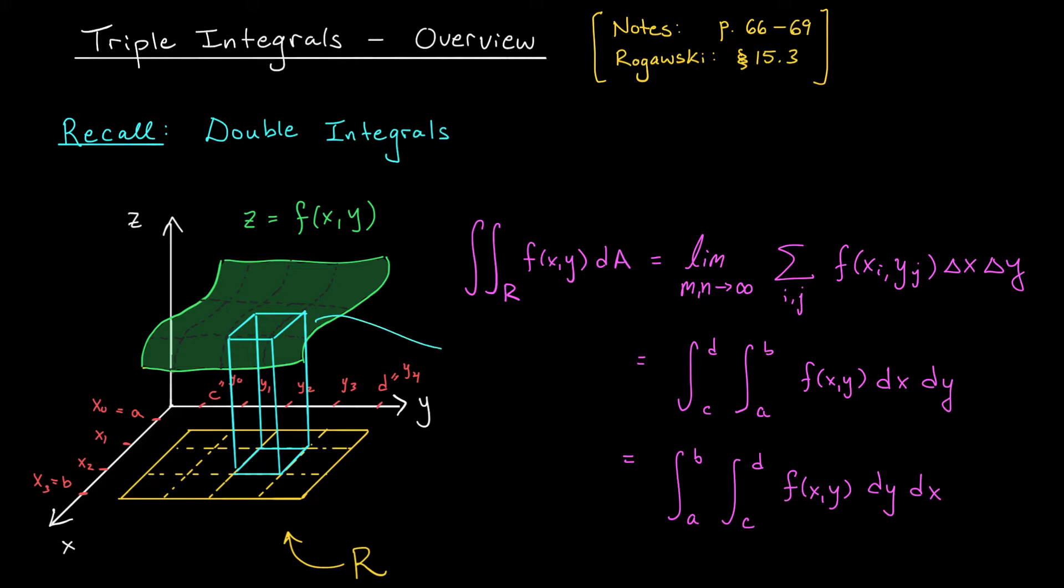Of course, we then have to multiply by the area of the base, which is really the change in x times the change in y. So our volume of one box is given by this formula here. And we have to add up all of those box volumes to approximate the total volume under our curve. That's this sum that you see here.